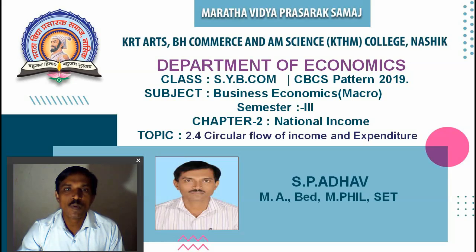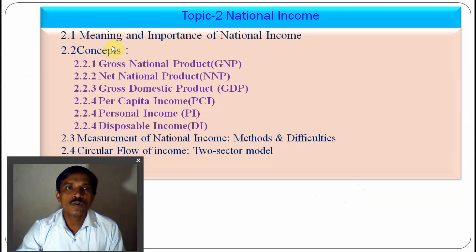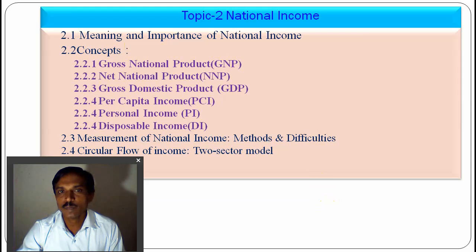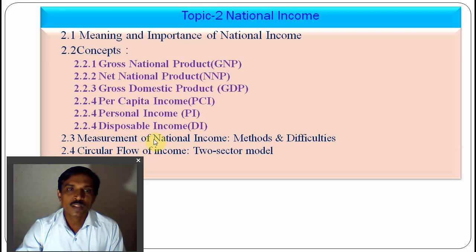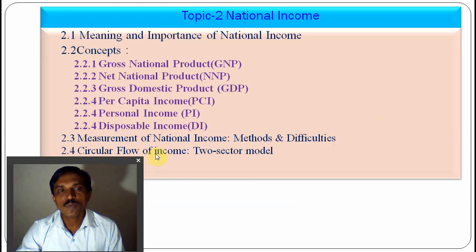Today we discuss another point and the last point in Chapter 2 on National Income: 2.4, the Circular Flow of Income and Expenditure. In 2.1 we saw the meaning and importance of national income, then some concepts of GNP, NNP, GDP, per capita income, personal income, disposable income, the measurement of national income by the product method, income method, and expenditure method.